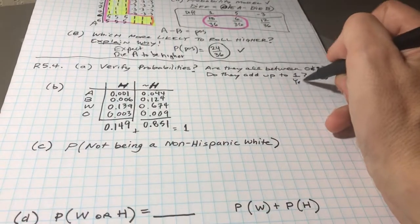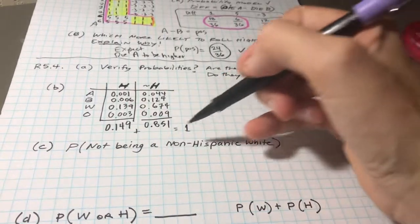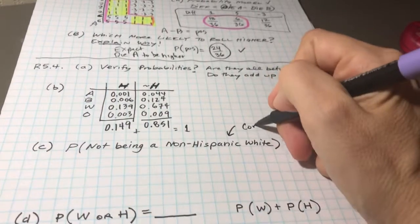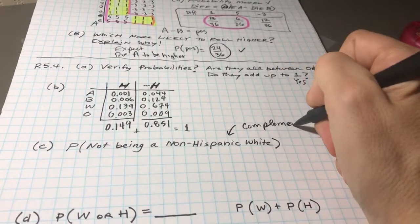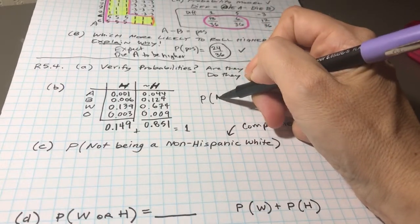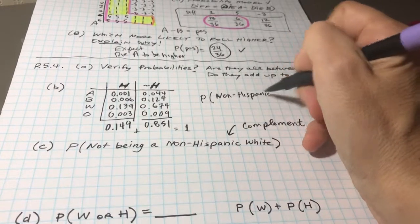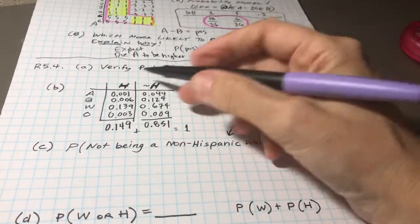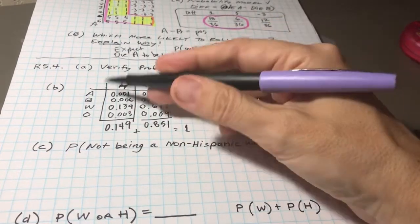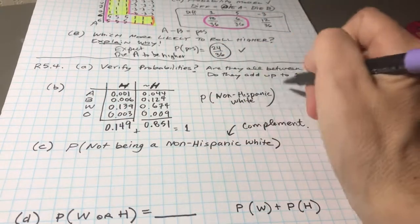So this would be mutually exclusive and exhaustive. Looking from this column, you're either Hispanic or you wrote not Hispanic, and they do add up to one. So yes. Now the next question is: what's your probability of not being a non-Hispanic white? So what I'm hoping you're picking up on here is the complement rule. So it's actually easier to figure out, well, what's the probability of being a non-Hispanic white?